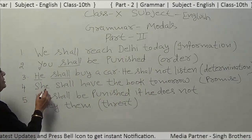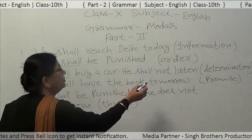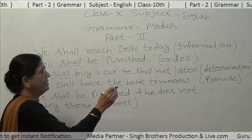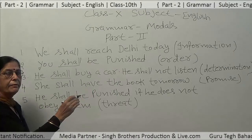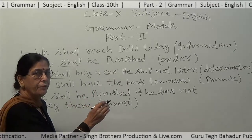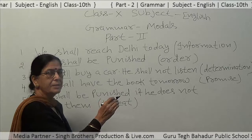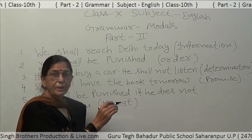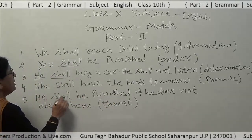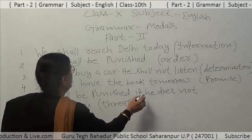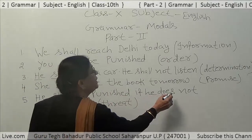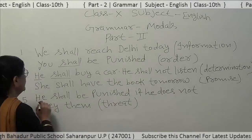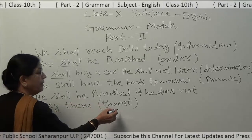Number four: 'She shall have the book tomorrow' — showing promise. When we have to show promise, determination, or order with second and third person, we use 'shall'. Otherwise, in simple future, we use 'shall' with first person and 'will' with others. 'He shall be punished if he does not obey them.' Here, threat is shown — third person, showing threat.